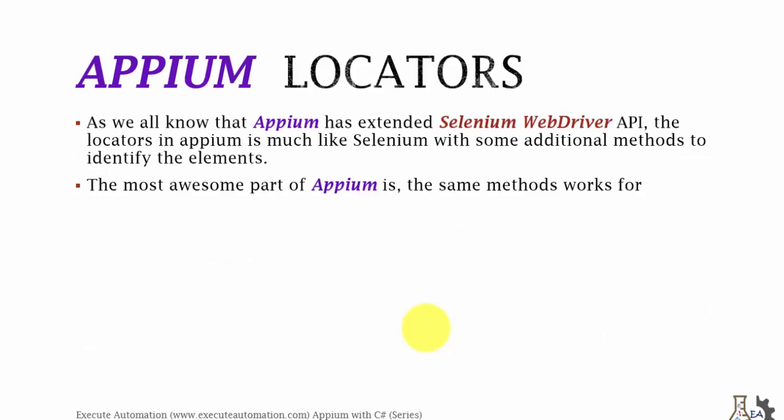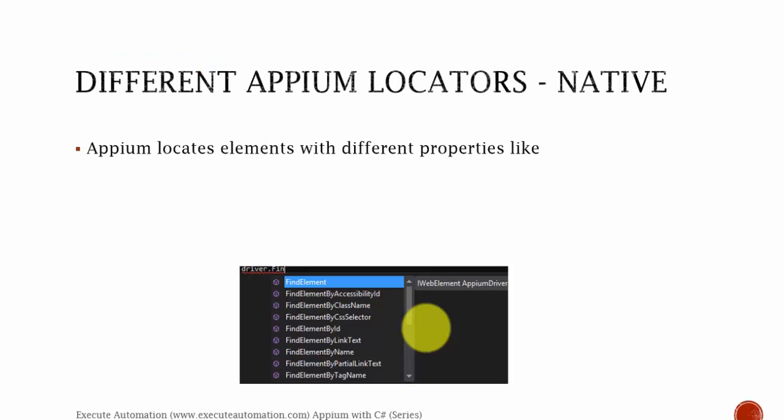Appium locators - as we all know, Appium has extended the Selenium WebDriver API. The locators in Appium are much like Selenium with some additional methods to identify elements. The most awesome part of Appium is that the same method works for native, hybrid, and web applications as well - though not always the same, as some methods will change for web and some will change for native.